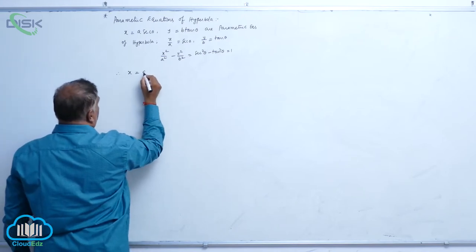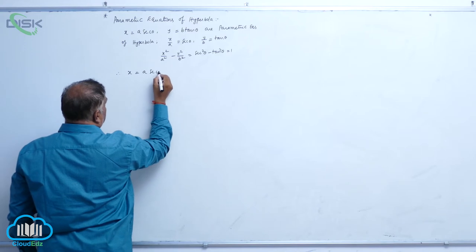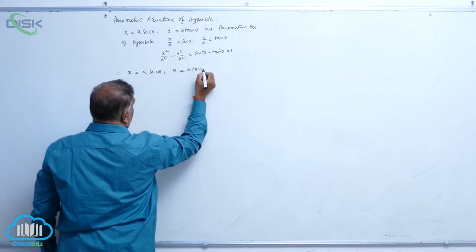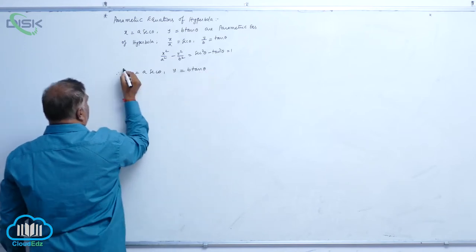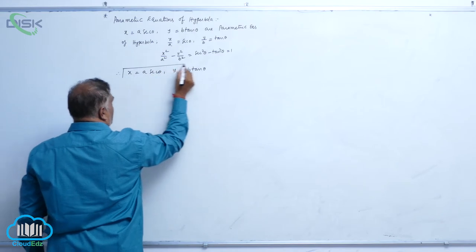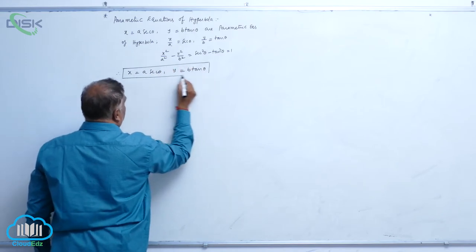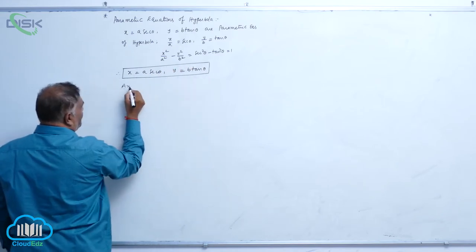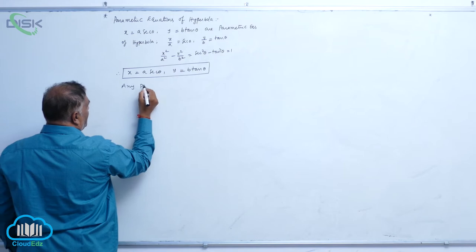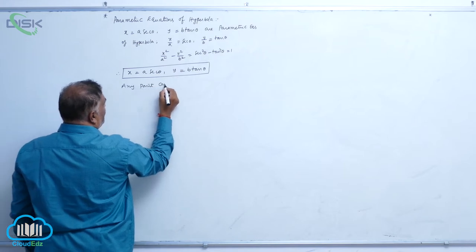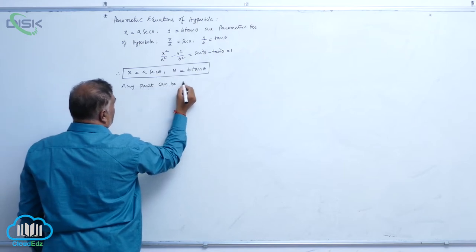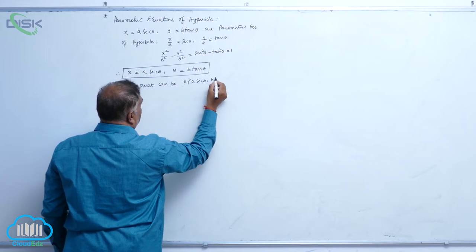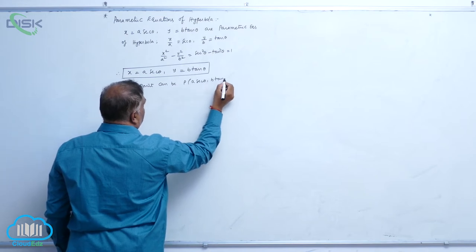This is the hyperbola equation. Therefore, x equal to a secant theta and y equal to b tan theta are the parametric equations, and any point on the hyperbola can be written as P(a secant theta, b tan theta).